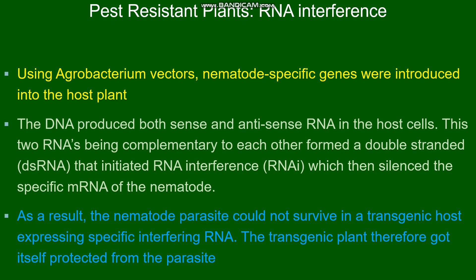In RNA interference, nematode-specific genes are introduced into the host tobacco plant using Agrobacterium vectors. The genes within the host plant undergo transcription and produce both sense and antisense RNA. The two RNAs, being complementary, undergo base pairing to produce double-stranded RNA, which initiates RNA interference.